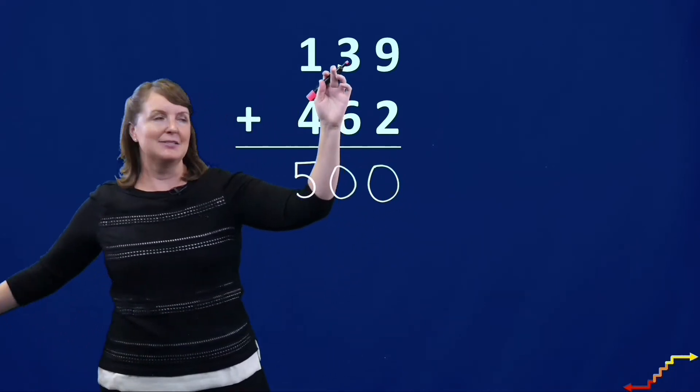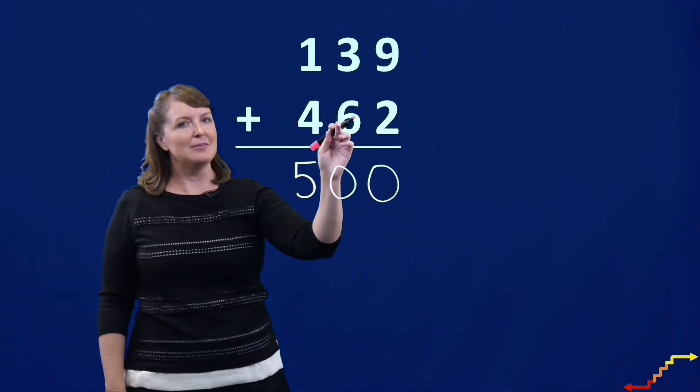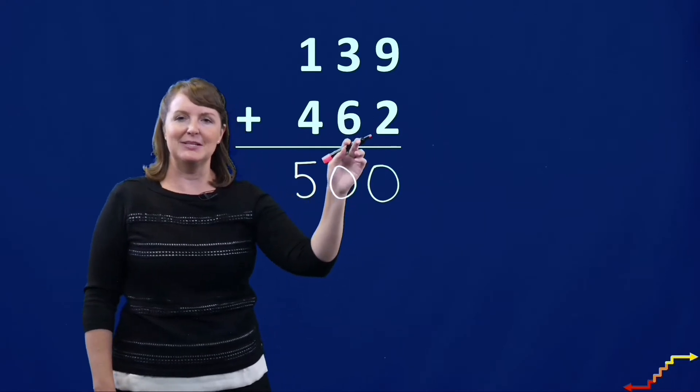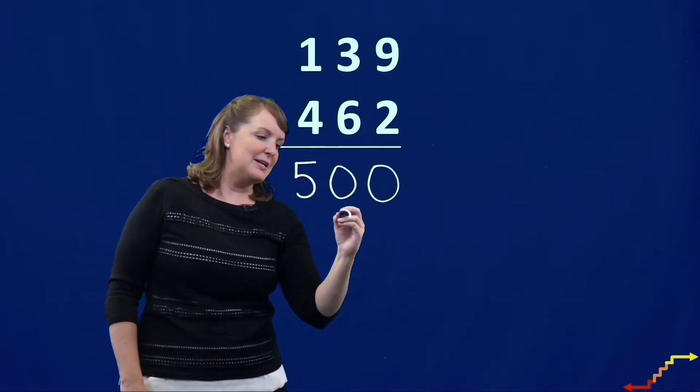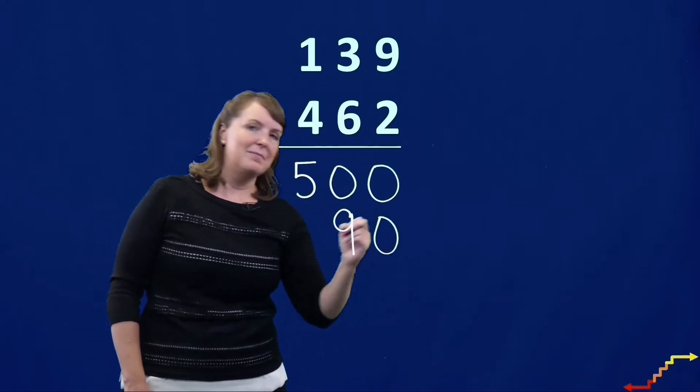Now I'm going to add the tens. 3 plus 6. But it's not 3 plus 6. We're adding 30 plus 60. 30 plus 60 is 90. So I'll write that sum right there.